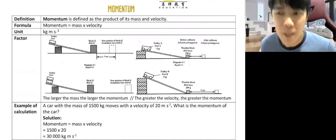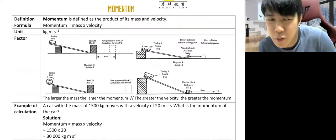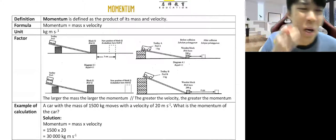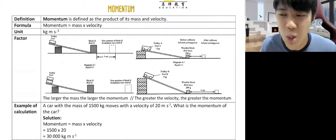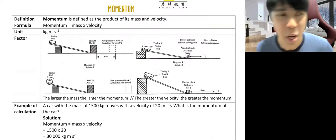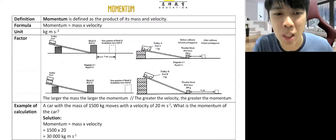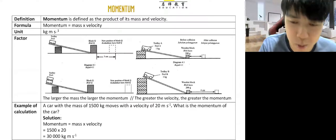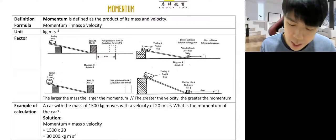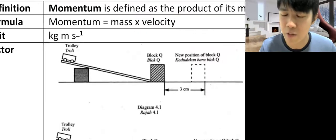Momentum is a calculation, which can be proven by numbers. Inertia cannot be proven — inertia, you can only see the after-effect. When the bus stops and you fall to the front, that's when you see the effect of force. But momentum is something where you can calculate and pre-know the number — how big or small the momentum is — even before the experiment. So momentum is defined as the product of its mass and velocity. Basically, the definition is the calculation.